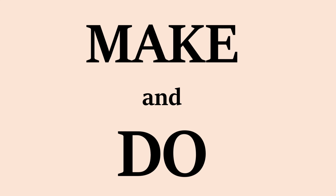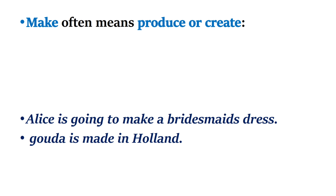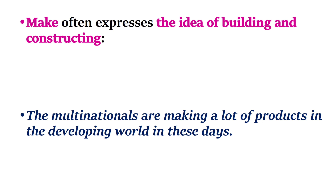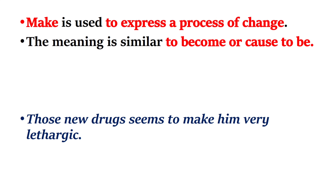The first part is about 'make' and 'do'. Make often means produce or create. Example: Alice is going to make a bridesmaid's dress. Buddha is made in Holland. Make often expresses the idea of building and constructing. The multinationals are making a lot of products in the developing world these days. Make is used to express a process of change — the meaning is similar to 'become' or 'cause to be'. Those new drugs seem to make him very lethargic.